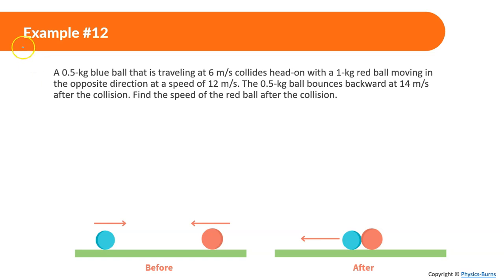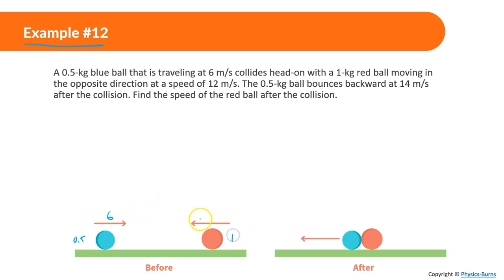Example 12: We have a 0.5 kilogram blue ball traveling at 6 meters per second that collides head-on with a 1 kilogram red ball moving in the opposite direction at 12 meters per second.